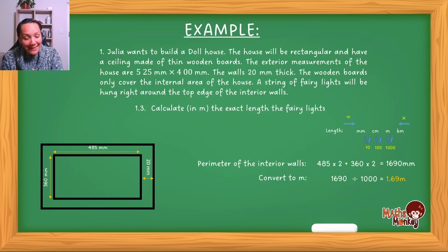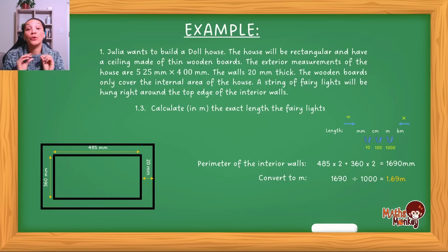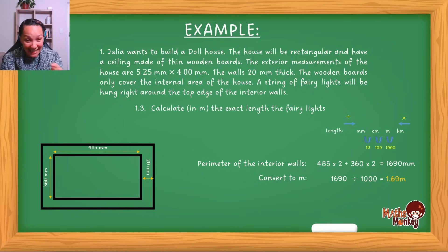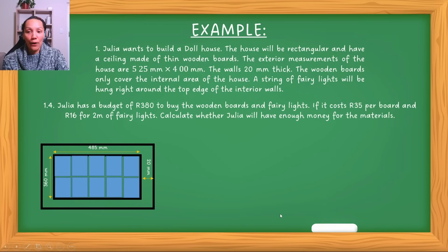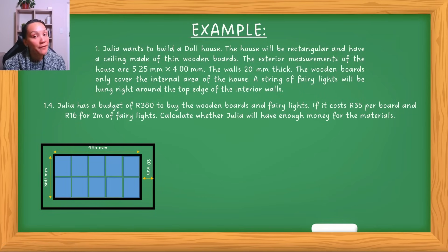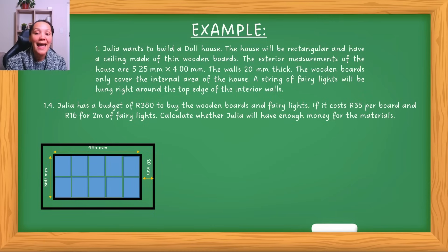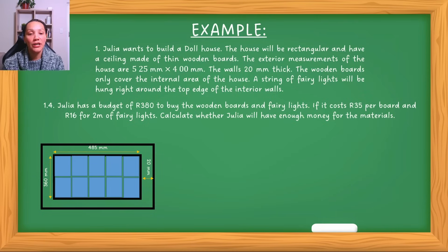The first two questions were looking at area — the area of the interior floor and how much of the boards' area can fit in the total area. However, for the third question we were looking at perimeter because we were only interested in placing the fairy lights on the outside edges of the walls. Now the last question: Julia has a budget of 380 Rand to buy the wooden boards and the fairy lights. If it costs 35 Rand per board and 16 Rand for two meters of fairy lights, calculate whether Julia will have enough money for the materials.